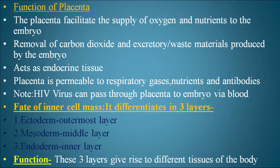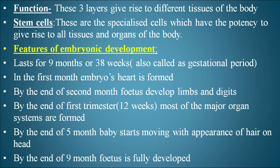The inner cell mass differentiates into three layers: the ectoderm (outermost), mesoderm (middle), and endoderm (innermost). These layers give rise to different tissues of the body. Stem cells are specialized cells with the potency to give rise to all tissues and organs of the body — some people choose to preserve stem cells.